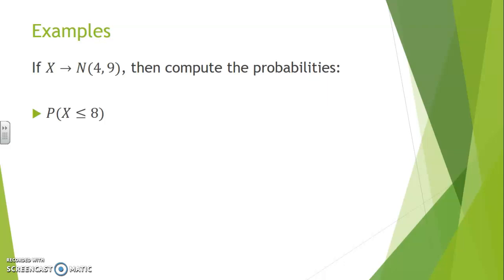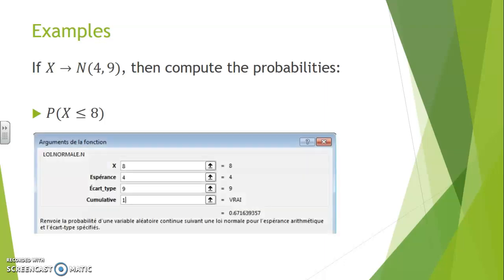For instance, if X has a normal distribution with 4 as the average and 9 as the standard deviation, then the probability that X will be less than or equal to 8 will be given by the NORMDIST function from Excel.